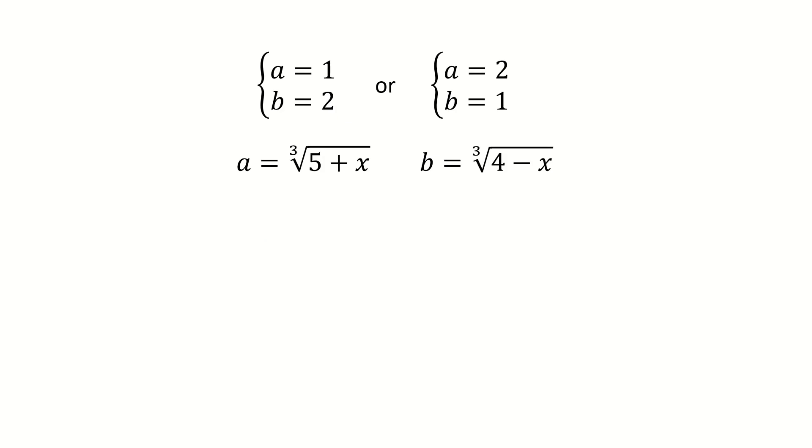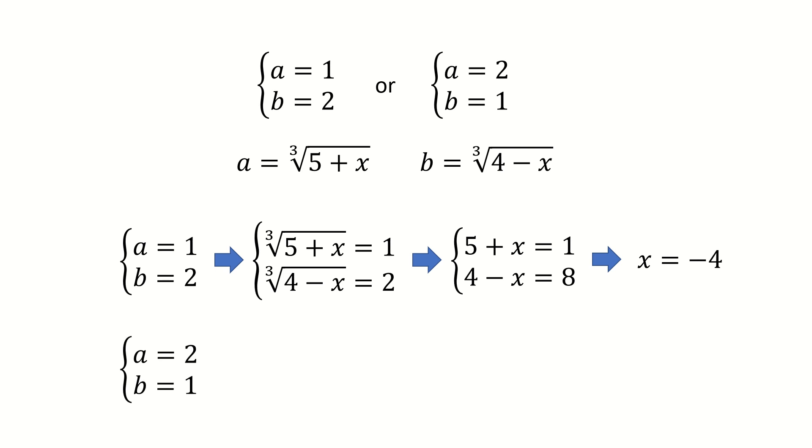Next, we just go back to solve x. For the first one, a is 1, b is 2. We put them back into the substitution. Then we got two simple equations for x. And we got x is negative 4. For the second one, again we put back into substitution. And we got x is 3.